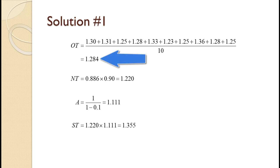The observations average to an observed time of 1.284. Multiplying that times the performance rating of 0.95 yields 1.220. Computing A based on the workday formula yields 1.111. Multiplying that times the normal time of 1.220 yields a standard time of 1.355.